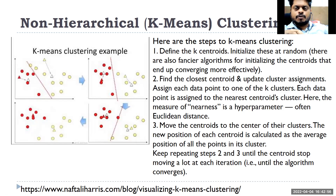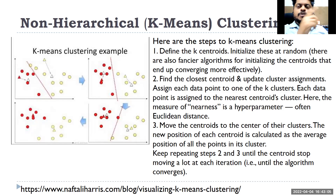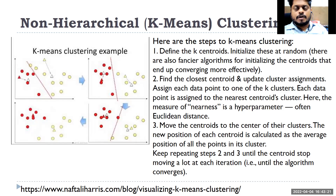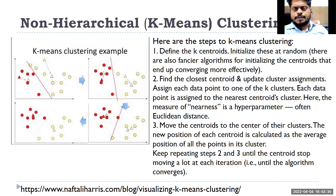Iterations continue — potentially 500,000 times — until there is no movement of customers between clusters. When that movement stops, that is the final cluster assignment. The key difference from hierarchical: you must specify the number of clusters beforehand. Both hierarchical and non-hierarchical clustering mostly use Euclidean distance.